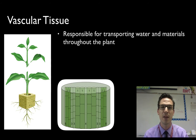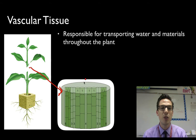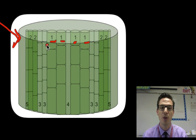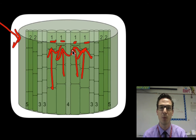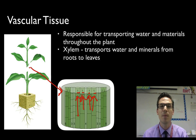Anytime the plant needs to transport something, it goes through vascular tissue. There are two types of vascular tissue. The first is xylem, noted by the number ones in this diagram. Xylem is a type of vascular tissue that transports water and dissolved minerals throughout the plant, and a key thing about xylem is that it only moves in one direction — upward. It transports water from the roots, through the stems, and to the leaves, driven by the force of transpiration as water evaporates.